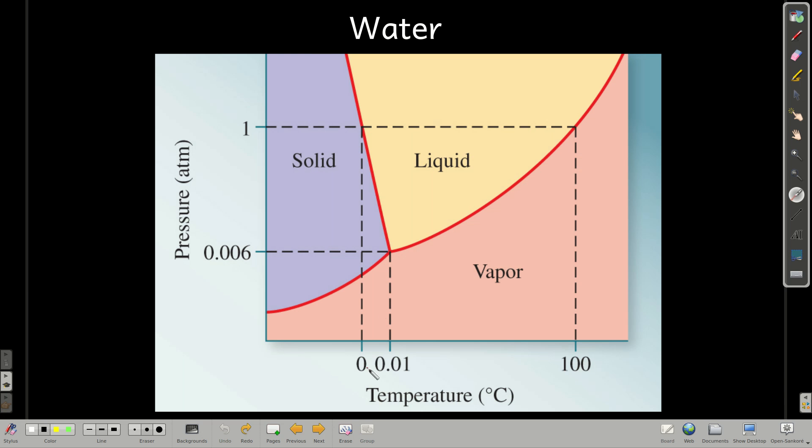Now, with water, you start out as a solid, and you increase the pressure within this temperature range, you make it a liquid. And what that tells us is that the liquid is more dense than the solid, at least at these temperatures.